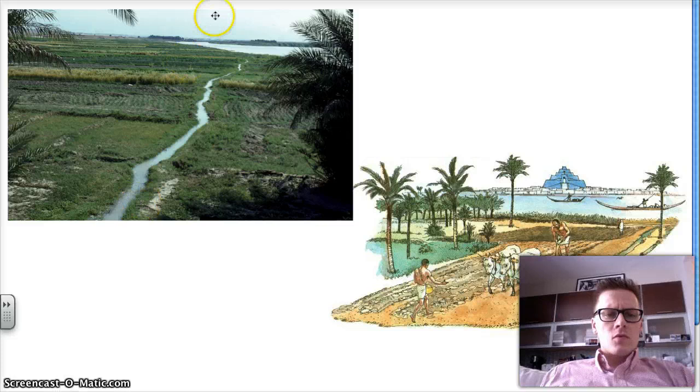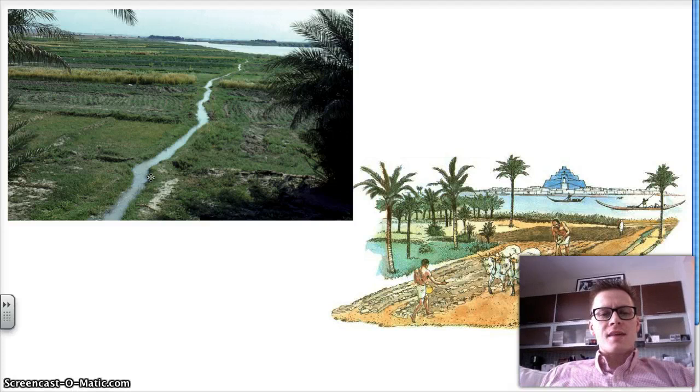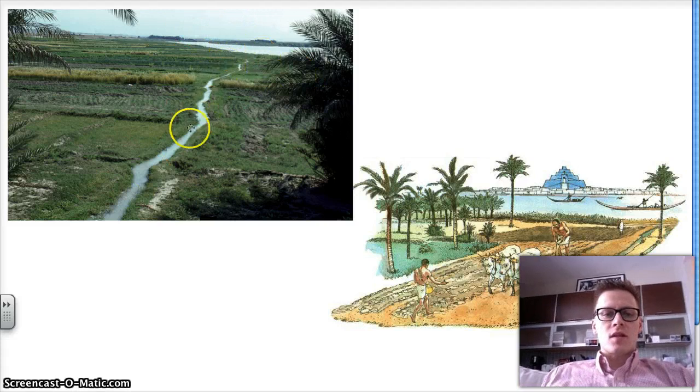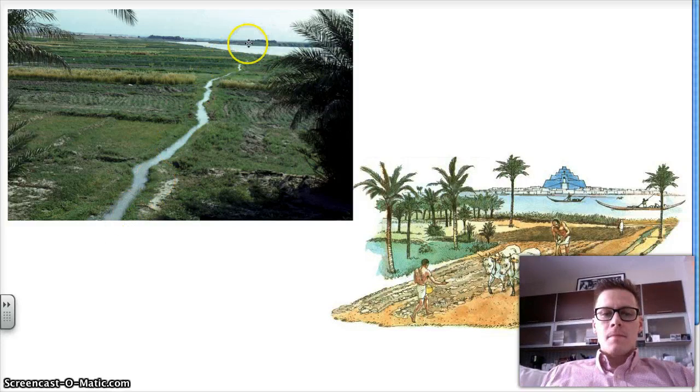So when we look over here we have an irrigation system. Now the important thing to remember about the irrigation systems is that this is not something one person can make. This is a river and this is a trench that goes a long ways. That's a lot of work. And one person can't do that.